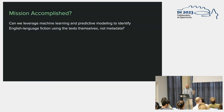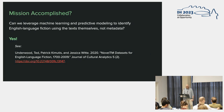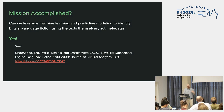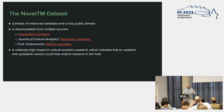So the question is: can we leverage machine learning and predictive modeling to identify items — specifically English language fiction — using just the texts themselves, bypassing metadata? The answer is kind of yes. We have a great dataset produced by Professor Underwood, Patrick Kamutis, and Jessica Witte, published formally in 2020 — the NovelTM datasets for English language fiction. We're going to build on this dataset, and Professor Underwood will speak about it now.